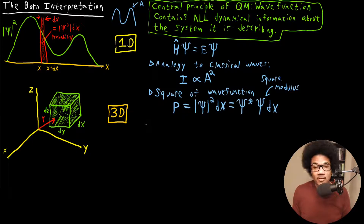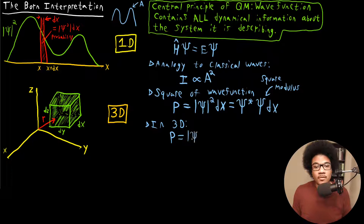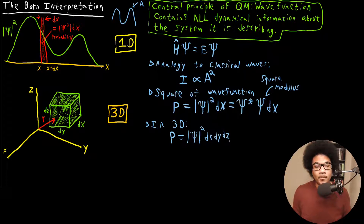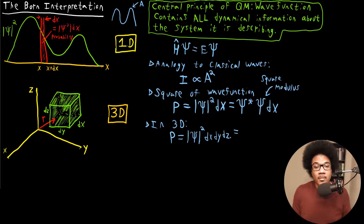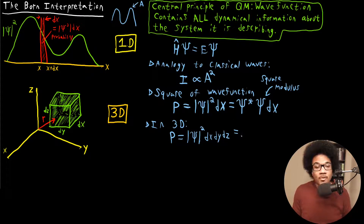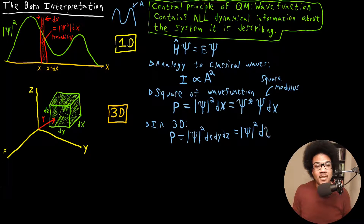This can be extended to three dimensions. If we're looking for the probability in 3D, that would just be the square of the wave function — obviously now a three-dimensional function — with a volume element that instead of just dx, we would have dx, dy, dz. In this course, I use the notation for a general volume element, because you could have dx, dy, dz or dr, d-theta, d-phi in different coordinates. When speaking very generally, I'll use the Greek letter tau to denote all coordinates, so I'll say d-tau instead of dx, dy, dz.